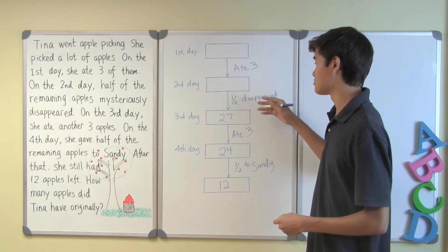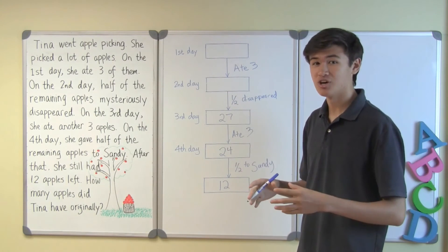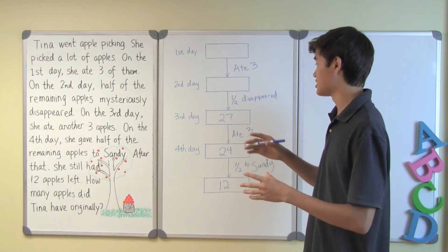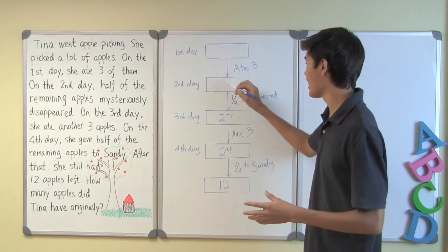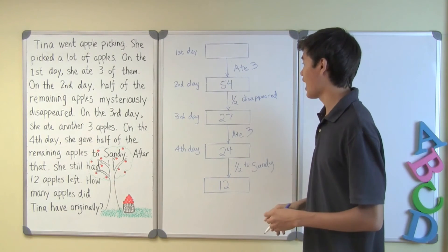Now let's go up to the next step. So another one where half of the apples are gone. Half of the apples are taken away. So we can just multiply by two once again. Tina now has 54 apples.